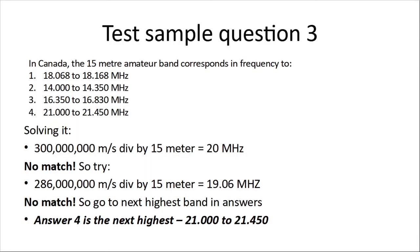Sample question three: in Canada, the 15-meter amateur band corresponds in frequency to which of these four? Rather than memorize, let's calculate. 300 million meters per second divided by 15 meters gives us 20 megahertz — not in any of the four bands. Next, 286 million divided by 15 meters gives us 19.06 megahertz — it doesn't fit any of them either. So we go to the next highest band: 19.06 — which answer is directly above it? That's answer four, 21 to 21.450 megahertz. It's a simple method, way easier than memorization, and for these frequency band questions it works for every one of them except one.